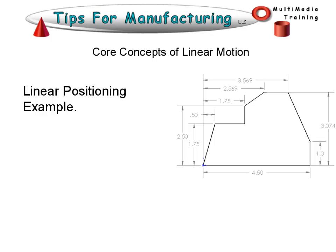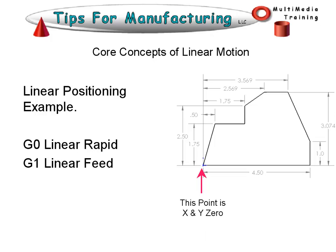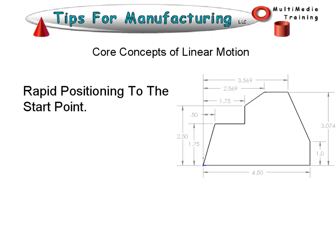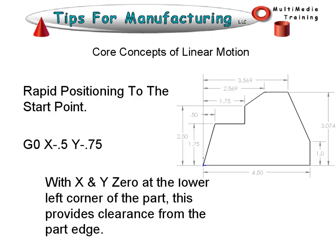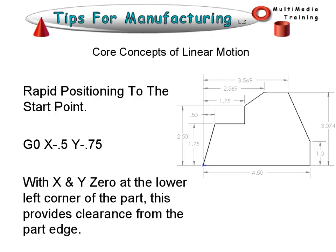Here's a linear positioning example. G0 is linear rapid, G1 is linear feed, and XY0 is the starting point. We're going to rapid position to the start point: G0, X minus 0.5, Y minus 0.75. With X and Y zero at the lower left corner of the part, this provides clearance from the part edge. Always make your starting point somewhere off the edge of the part, accommodating for the radius of the tool plus whatever stock may be on the blank.